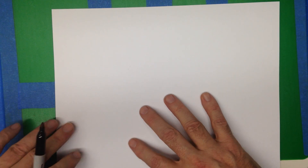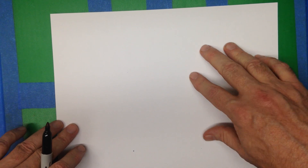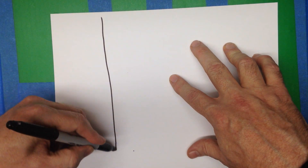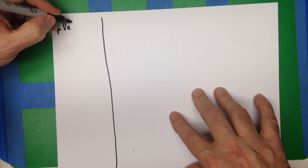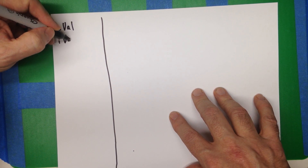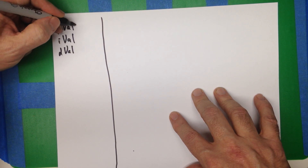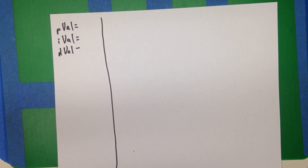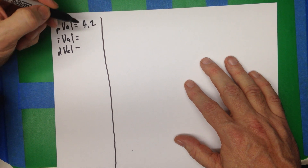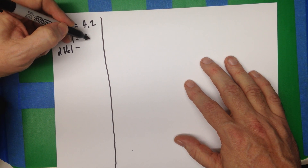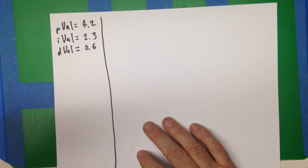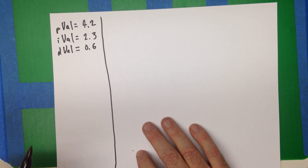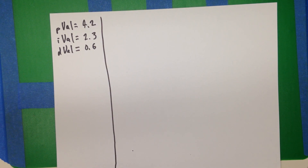If you recall from the first series, we're going to have a couple of variables. I'm going to initialize all the variables in this column and then write the code over here. We're going to have the P value, the I value, and the D value. If you look at whatever your GUI is for your controller, you'll see some values — maybe P is 4.2, I is 2.3, and D is 0.6. It doesn't really matter what those are; they'll vary by controller, but we'll assume those are our values for the boxcopter.